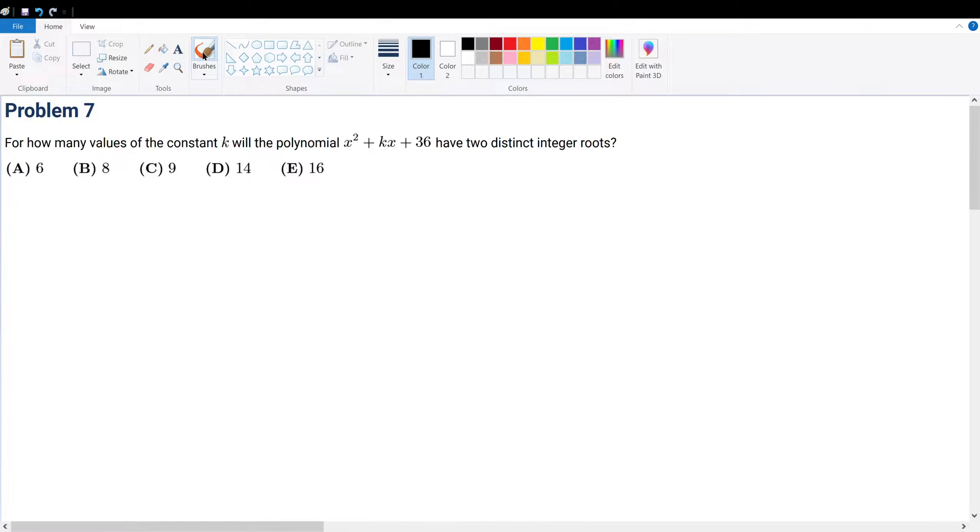Problem 7. For how many values of the constant k will the polynomial have two distinct integer roots?